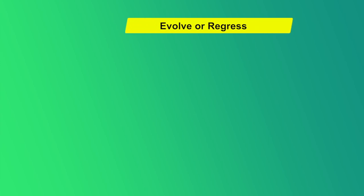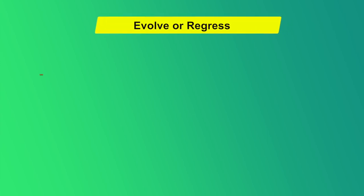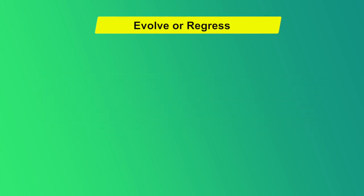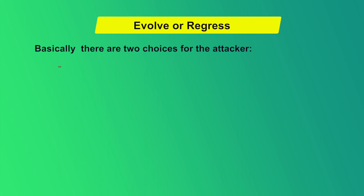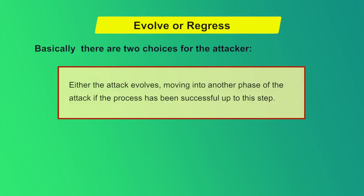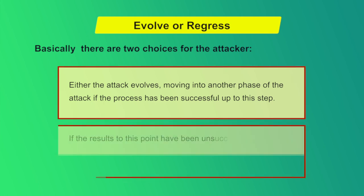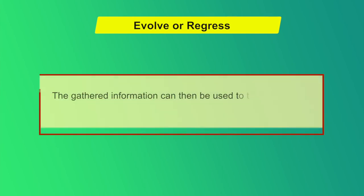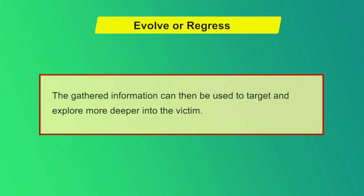The sixth and final step is evolve or regress. This is where the attacker learns from the process and creates an internal justification for what has happened. There are two choices: either the attack evolves by moving into another phase if the process has been successful, or if results have been unsuccessful, the attacker can either stop the attack or move to a more basic level in order to succeed. The gathered information can then be used to probe deeper into the victim until the attacker achieves their goal.